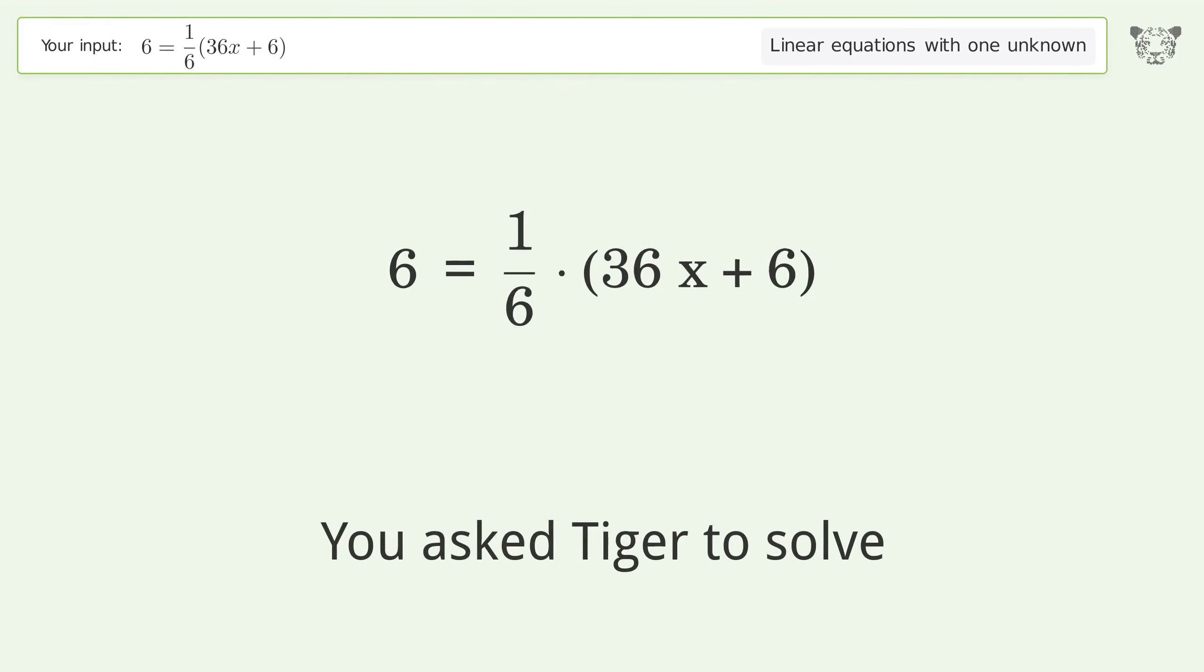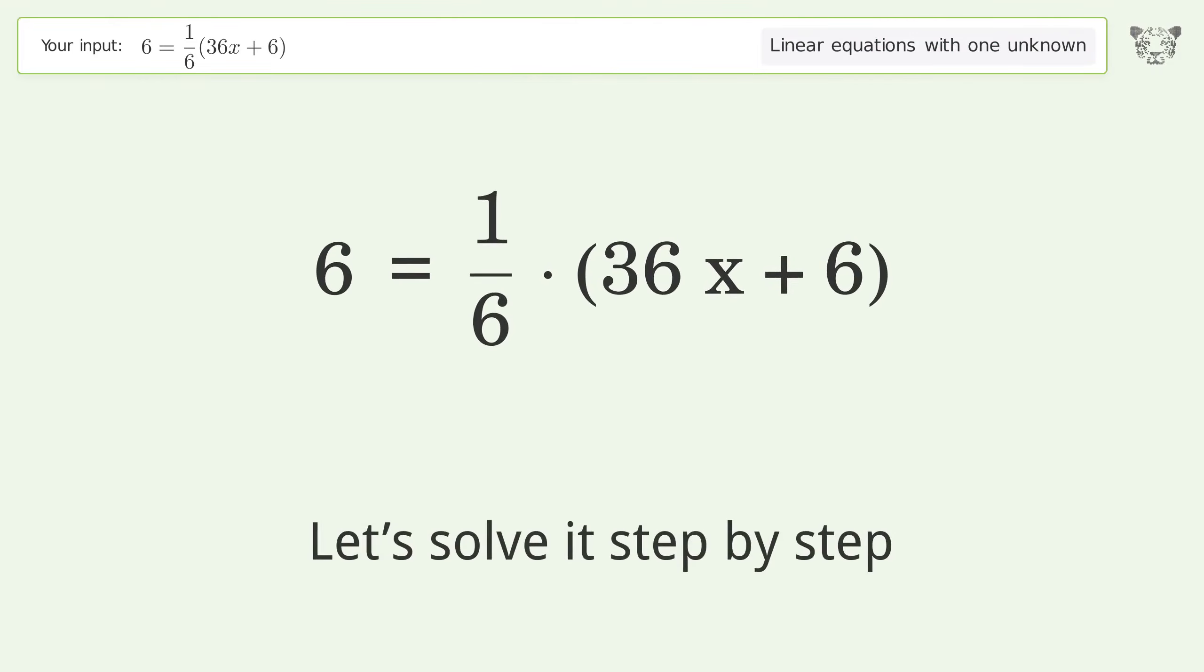You asked Tiger to solve this. This deals with linear equations with one unknown. The final result is x equals 5 over 6. Let's solve it step by step. Simplify the expression.